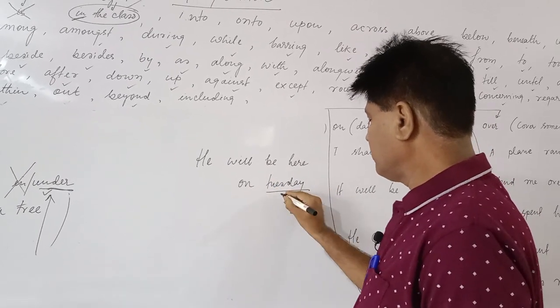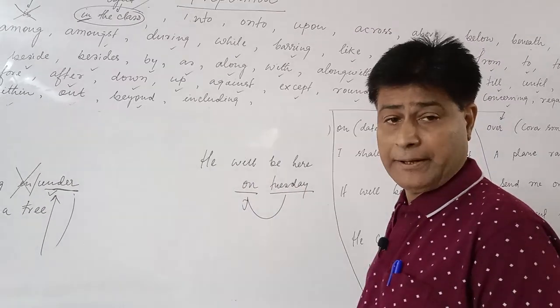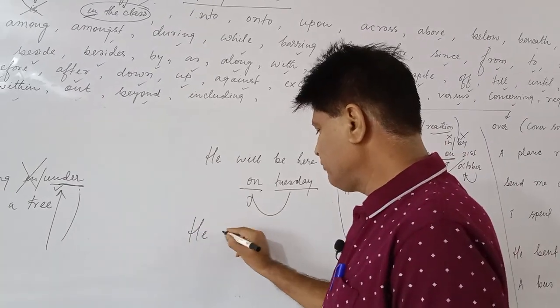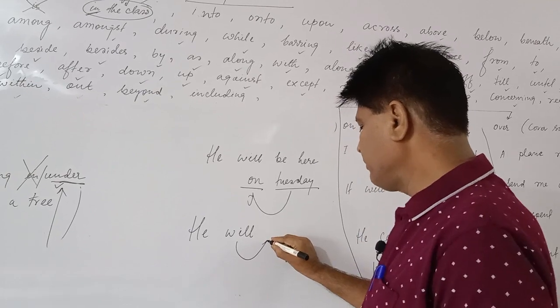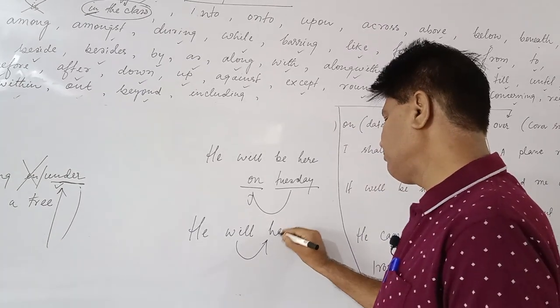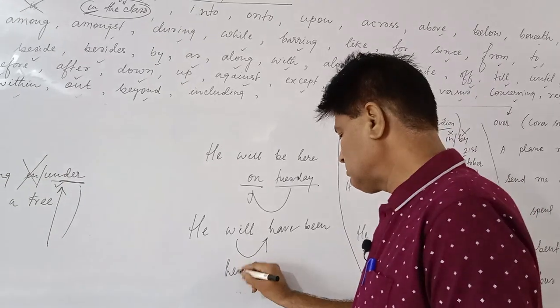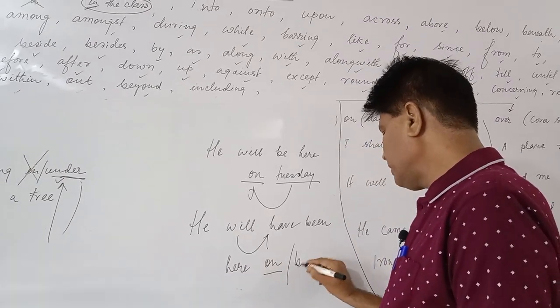he will be here on Tuesday, before day also on Tuesday. But in the case of if you define with definite time that will happen, he will have been here, on will not be correct, here by will be correct, denoting that action is not going to finish up after that. By Tuesday will be correct.